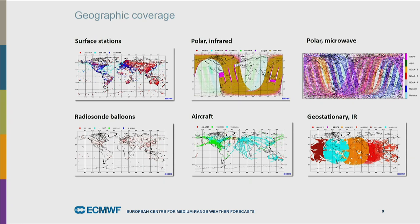We also use data from commercial aircraft. It looks like fairly decent coverage, but in detail it's mainly over inhabited land areas and well-trafficked ocean areas, and most aircraft data is at about 10 kilometers height, so the vertical coverage is not great. Where aircraft take off and land you get vertical profiles, but those mostly coincide with the positions of radiosondes. The aircraft data is still important but it is not as extensive as you might think when you look at the map.